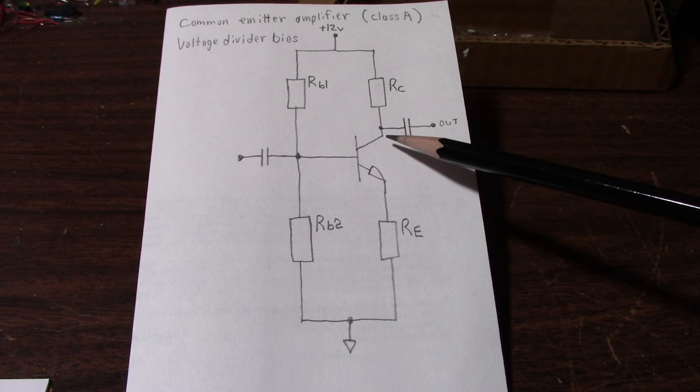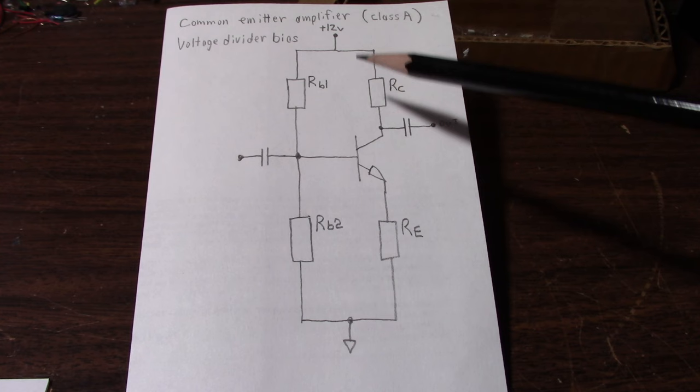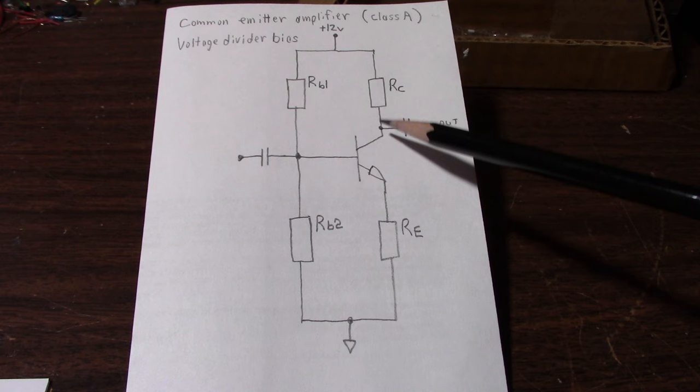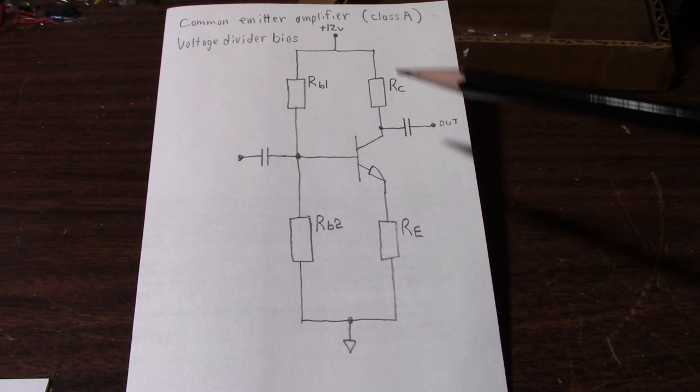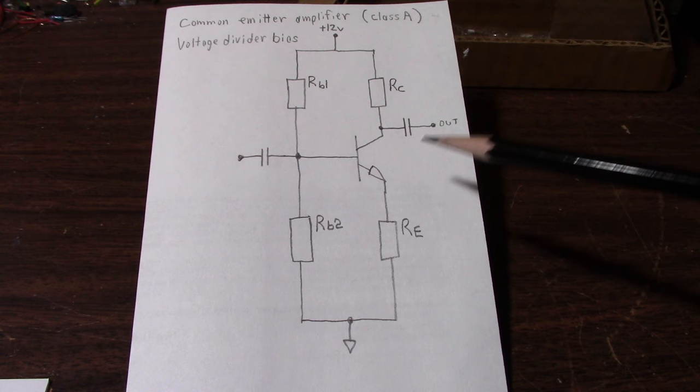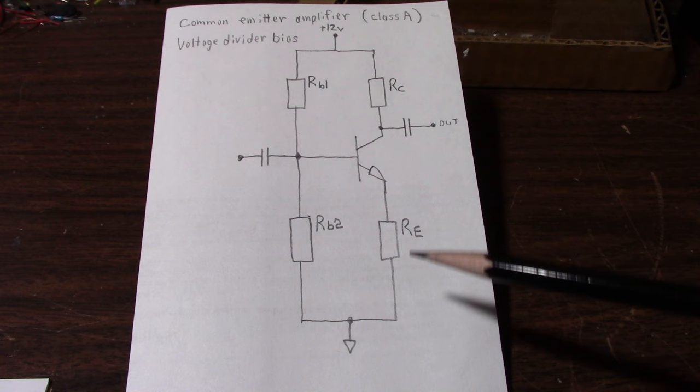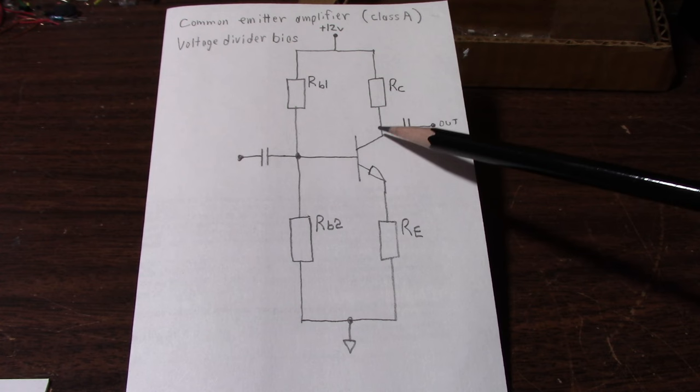So now I need to know how much current is going to flow through this resistor. And that's quite easily done. Well in my example I'm using a 12 volt supply. And the voltage at the collector will be around 6 volts, give or take. And that is half the supply voltage. The reason for that is to give the proper headroom for your waveform. Now if you bias this too high you're going to clip the top of your waveform off. Conversely if it's biased at too low a voltage you'll clip the bottom of your waveforms.